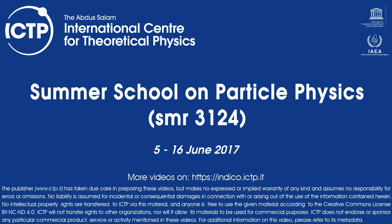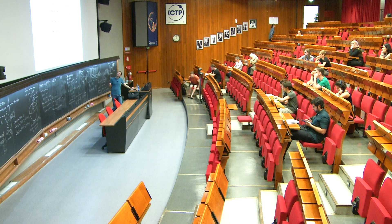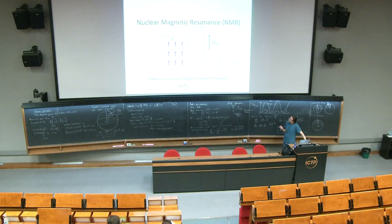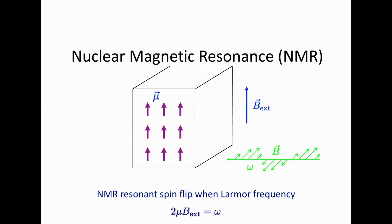Just to remind you, we went through the bare essentials of NMR where, basically, if you apply a transverse magnetic field to spins that are oriented along an external field, we can cause spin flips and Larmor precession in the spins if we have the resonance satisfied, where the Larmor frequency matches the frequency of the oscillation of the transverse field.